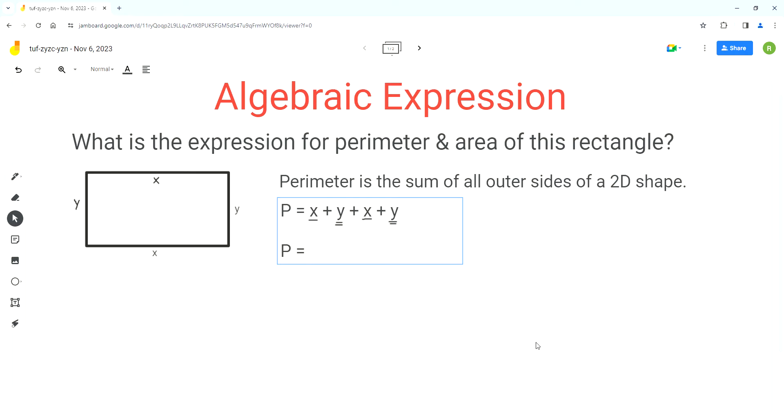The first step we can do is to gather these like terms. Gathering like terms means writing them together next to each other, so it'll be x plus x plus y plus y. We have written the x terms together and the y terms together.